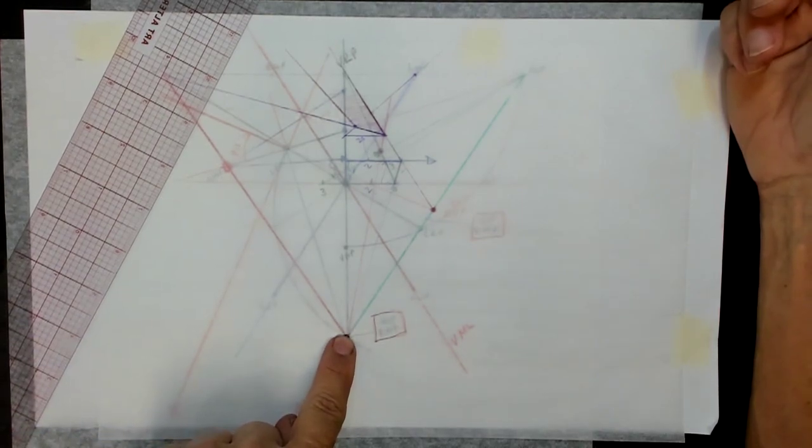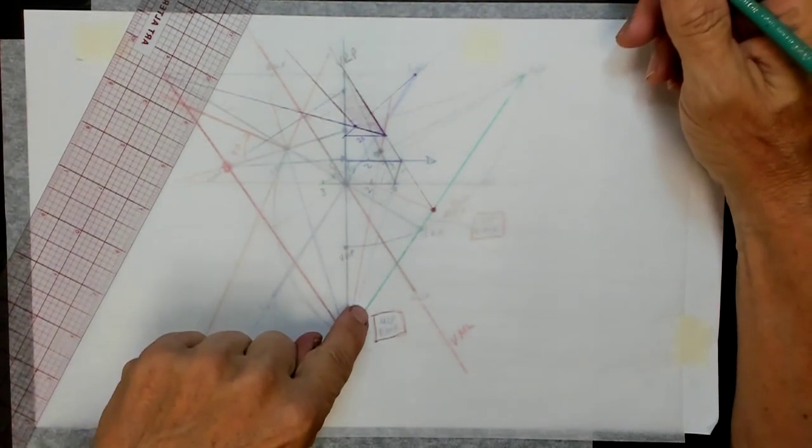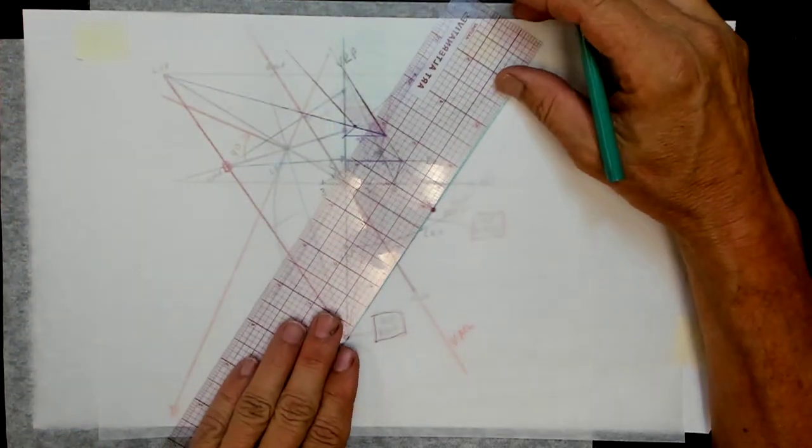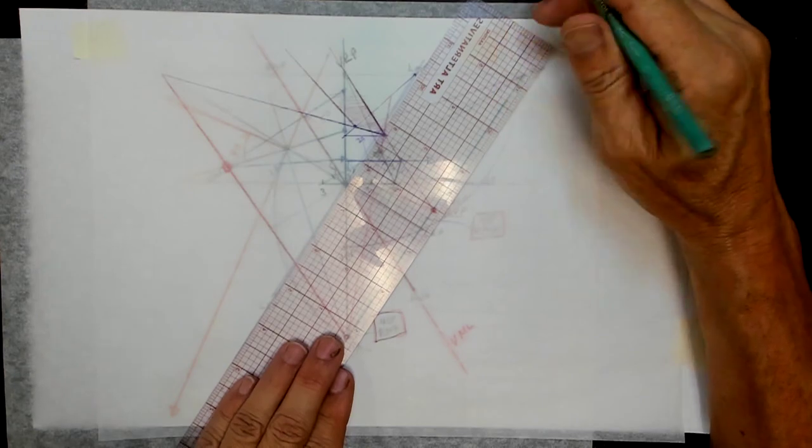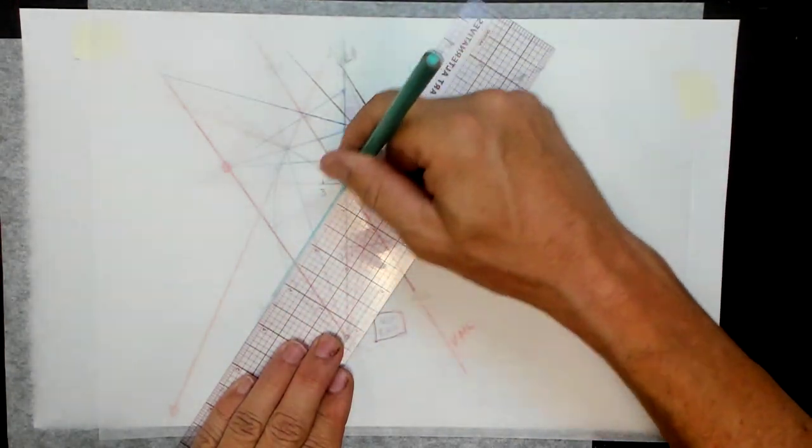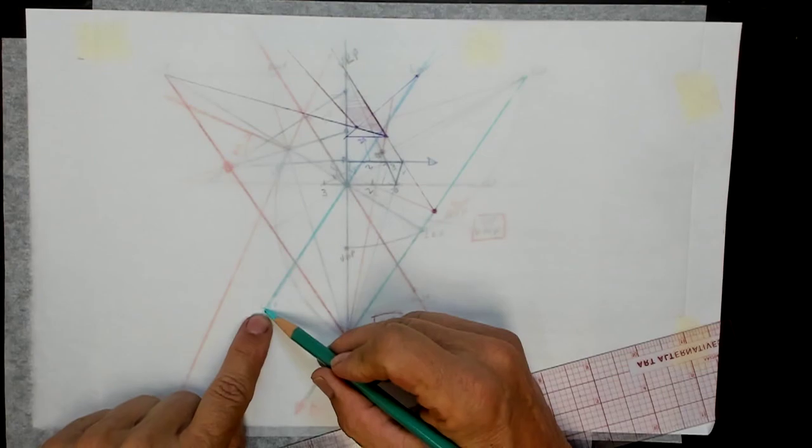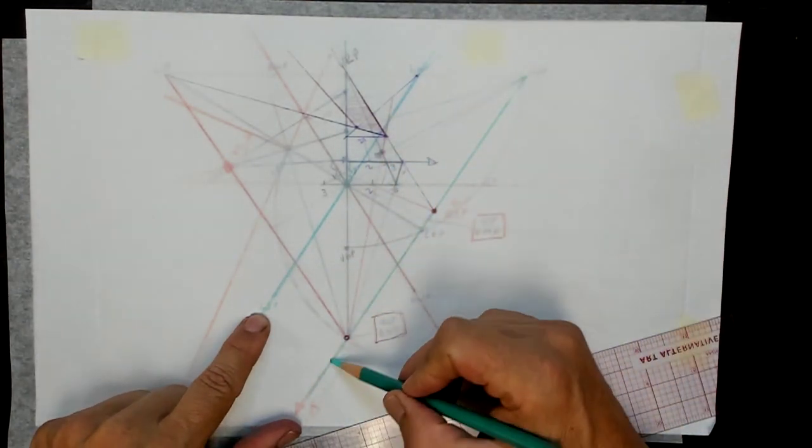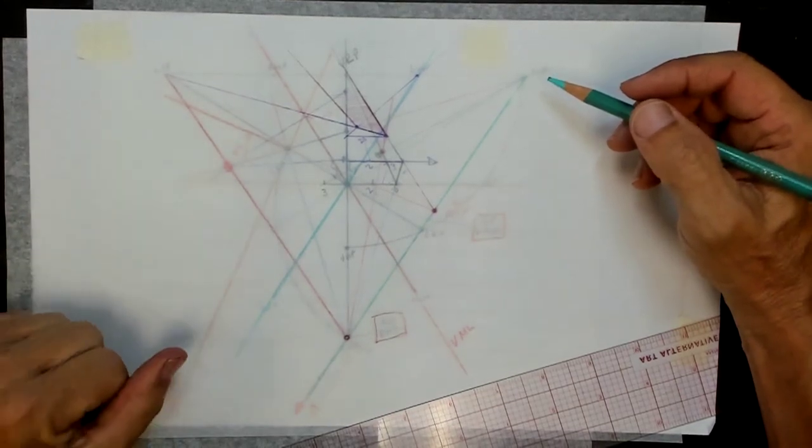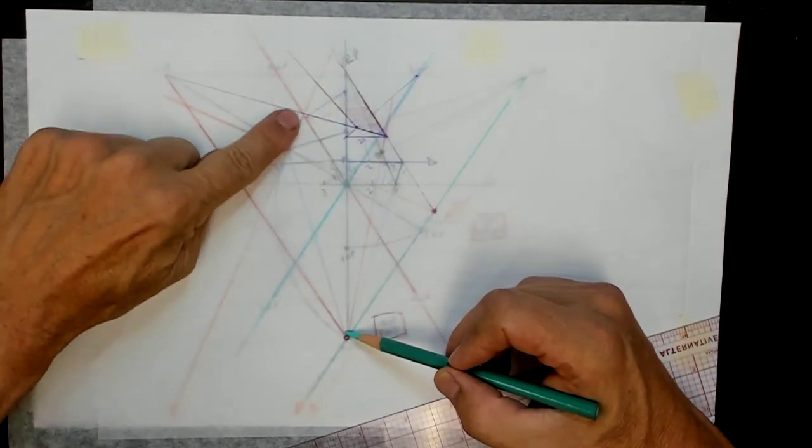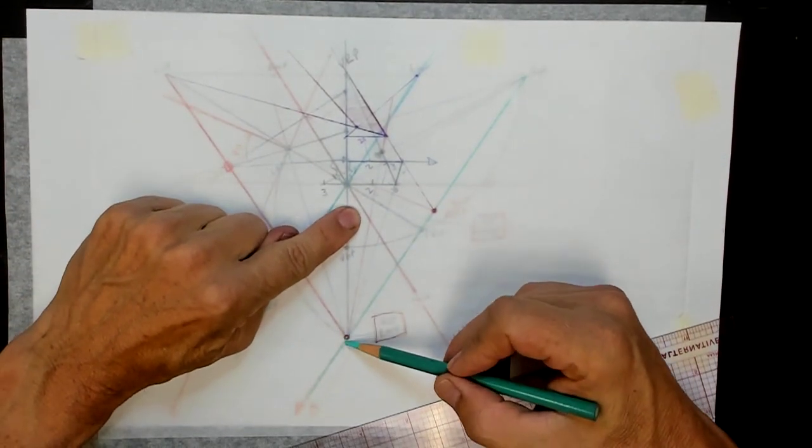So our measuring line we have to use needs to be parallel with this. So if I come over here, this line—the line that the left station point is on is parallel with this one. I need to have a brand new angle for my measuring line because I can't use this one. It's not parallel with the line that this measuring point is on.